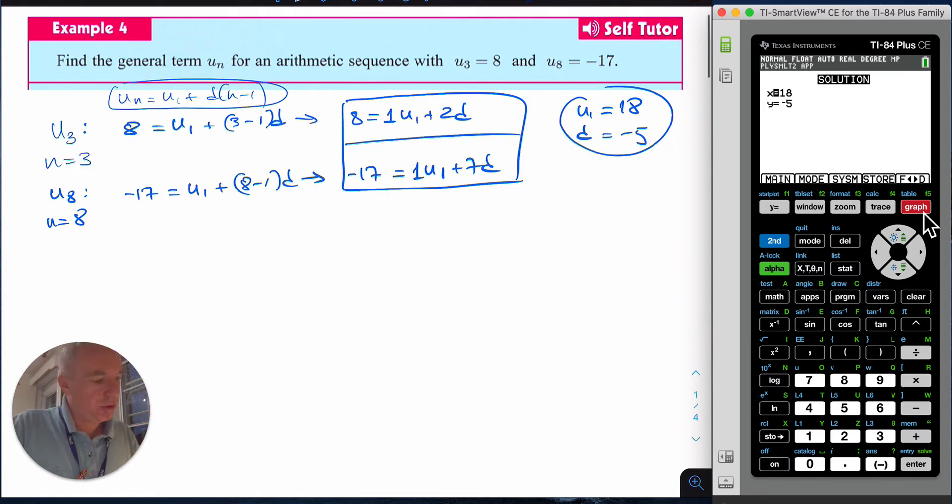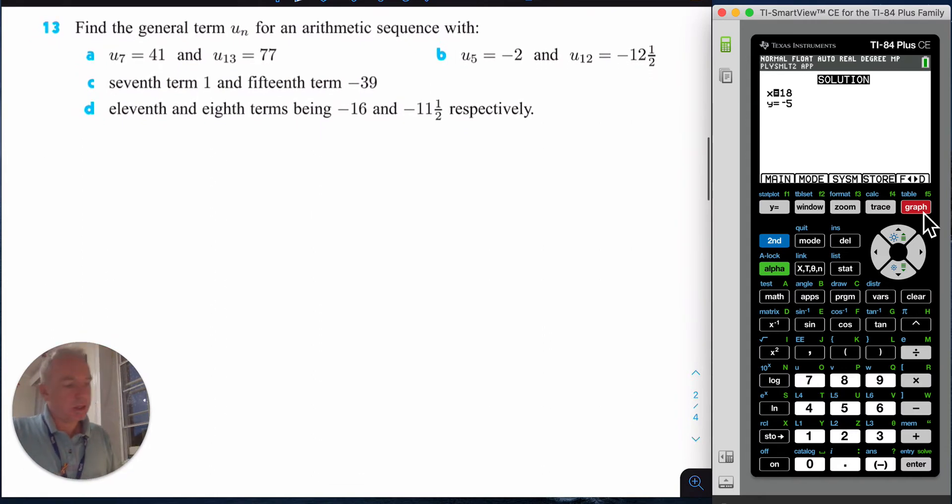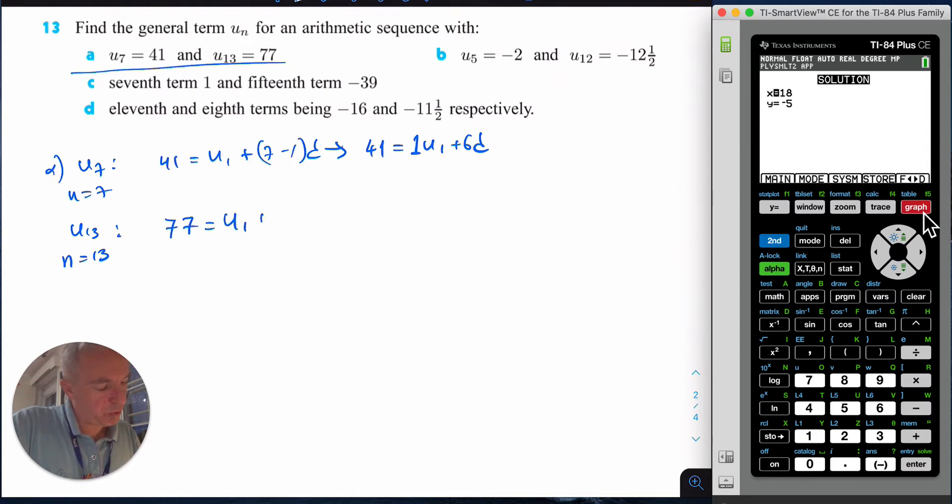Let's see another problem, number 13. This time I have u7 = 41, so for u7 where n equals 7, I get 41 = u1 + 6d. For u13 where n equals 13, I get 77 = u1 + (13-1)d, so 77 = u1 + 12d. I get my two equations.